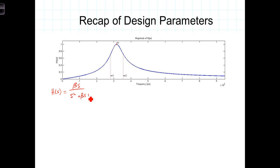squared plus beta S plus omega naught squared, where beta, the bandwidth of the filter, is equal to R over L, and omega naught squared is equal to 1 over LC.